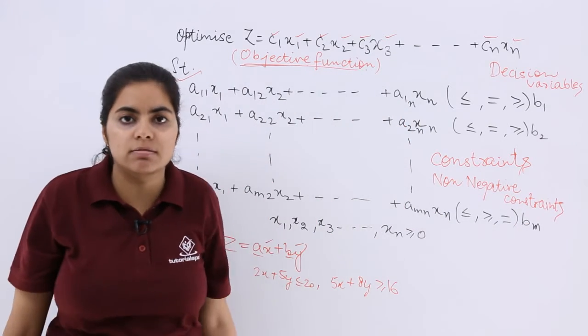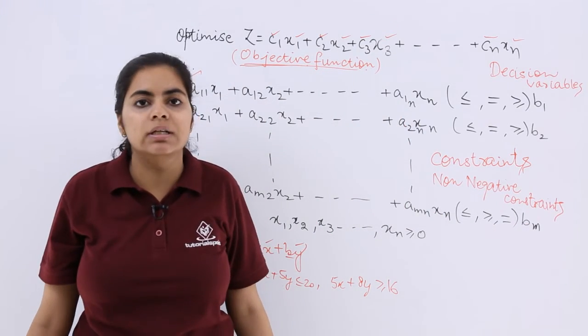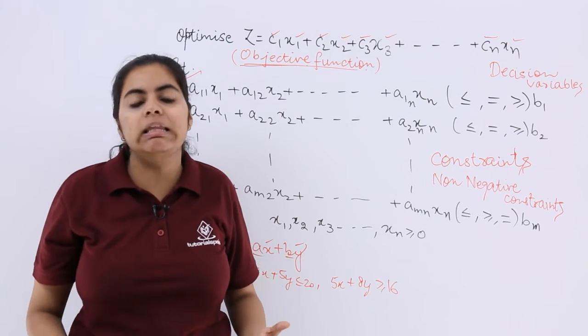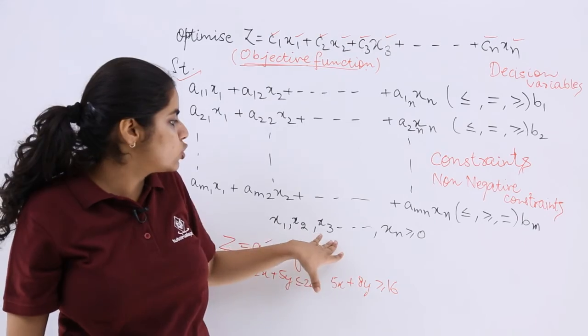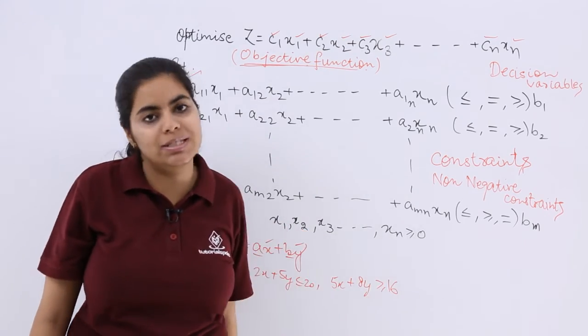If I say number of chairs, can they be negative? Never. They can be zero but they can never be negative. So such kind of constraints are called non-negative constraints: x1, x2, x3 and so on, greater than equal to zero.